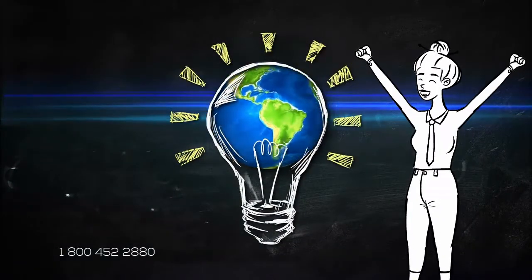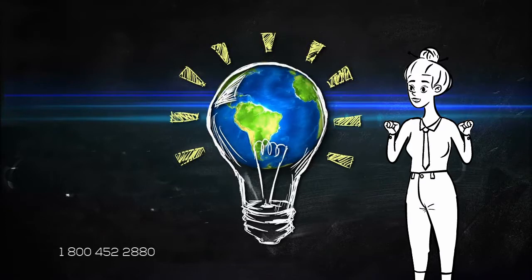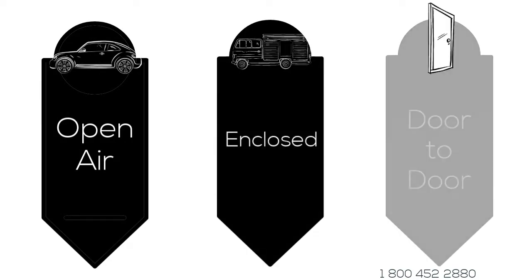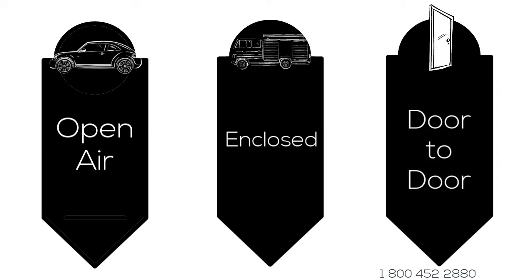We offer different types of shipping services that will fit any budget. Open air, the fastest and cheapest way to transport your vehicle. Enclosed, a little more time to deliver, but protection from all the elements. Door to door, a way to deliver your vehicle right to your doorstep.